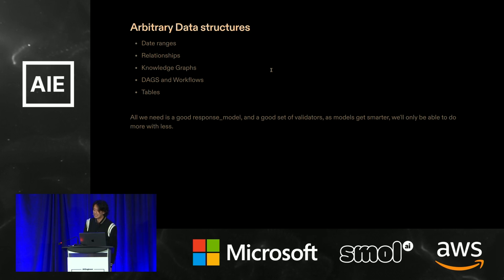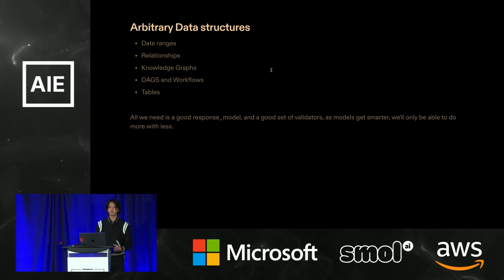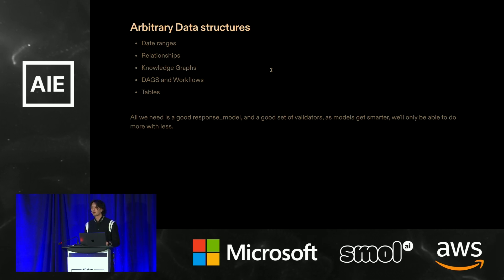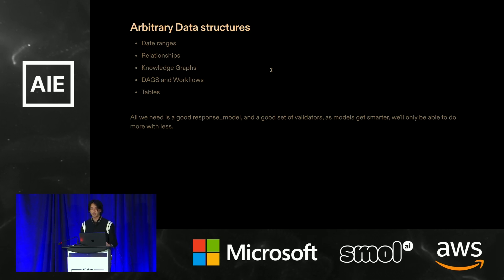We can now generate things like date ranges, relationships, knowledge graphs — as shown last year — and generally think about DAGs, workflows, and tables. All we really care about is coming up with a creative response model and having a good set of validators. As models get smarter, we're only going to have to do less and less. This is fairly bulletproof.